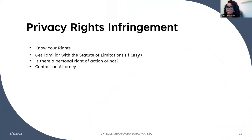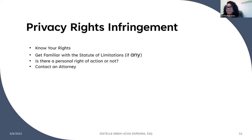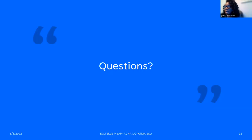On privacy rights infringement — this is where you would have to take action. Know your rights and get familiar with the statute of limitations. Determine if there is a personal right of action — sometimes you may not be able to bring a suit personally; it would have to go through the enforcement agency. Sometimes there is a personal right of action where you can, as a person, sue the organization that has infringed on your rights. Contact an attorney — data privacy professionals who are licensed and have the legal backing to represent you in court — to best protect your interest.